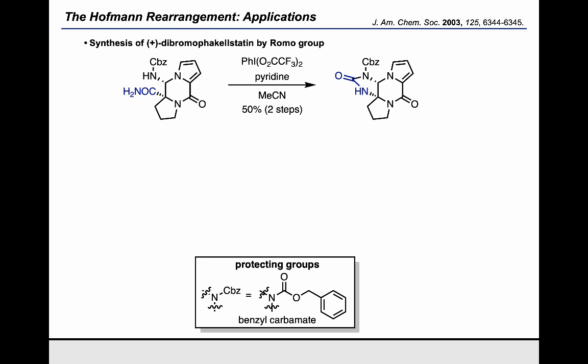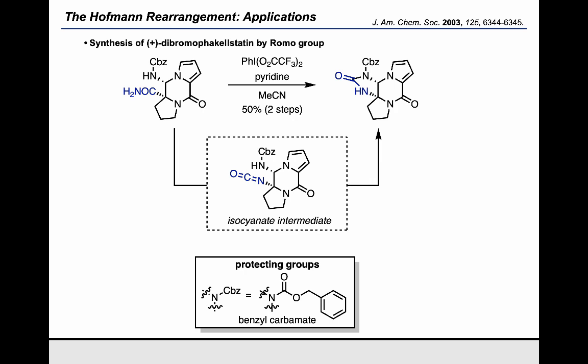This is an example from the Romo group, who synthesized the natural product dibromofacalstatin using this reaction. Starting from a carboxamide, the Romo group showed that it was possible to use a hypervalent iodine source to trigger a Hoffman rearrangement, allowing the synthesis of an isocyanate intermediate. The virtue of that intermediate was that it had a protected amine right next door, ready to behave as a nucleophile in a ring-closing reaction that resulted in formation of a urea. Importantly, the stereochemistry of the carbon marked in red was retained through this transformation, which is a very useful and important aspect of the Hoffman rearrangement.